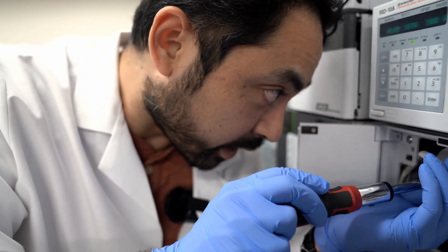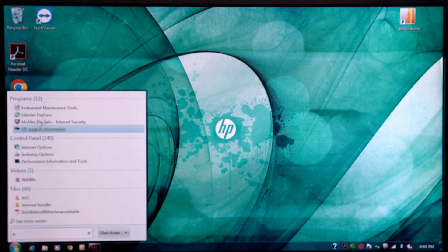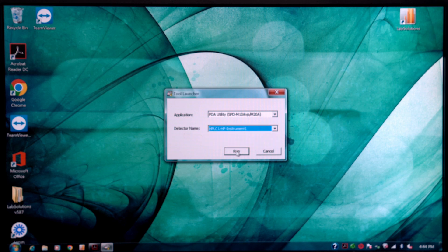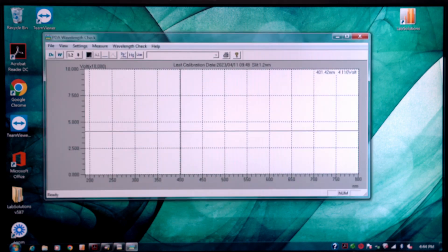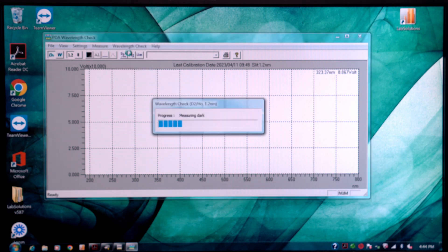You have to do the software calibration to make sure everything passes. The first thing you want to do is go to Instrument Maintenance Tools right here, and then we want to select M20A and HPLC1. And the first thing you want to do is a wavelength check, so you click that and you go wavelength check and then D2 H2O.